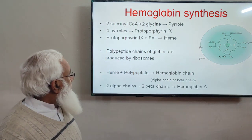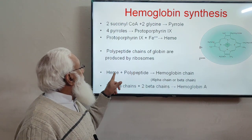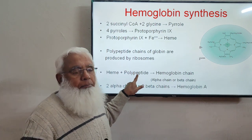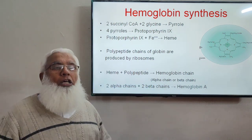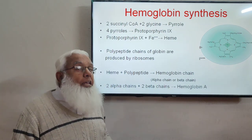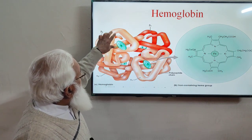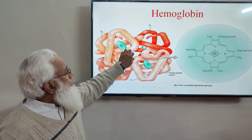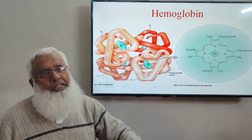The combination of heme with a polypeptide chain results in one hemoglobin chain. Four chains together form a complete hemoglobin molecule. Normal adult hemoglobin consists of two alpha chains and two beta chains. The difference between alpha and beta chains lies only in the amino acid sequence of the globin portion, resulting in slightly different structures. This four-chain structure is the complete hemoglobin molecule.